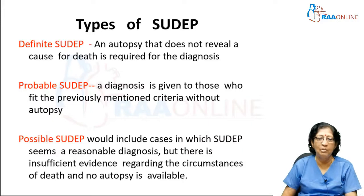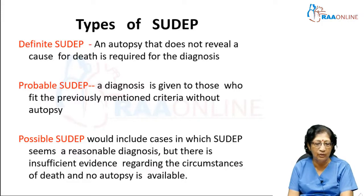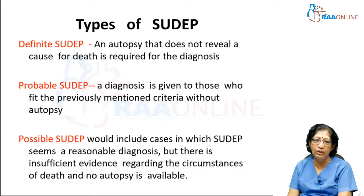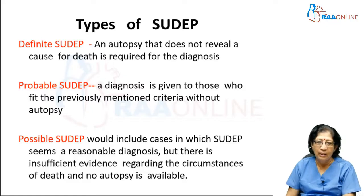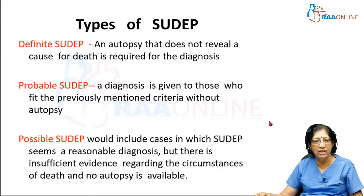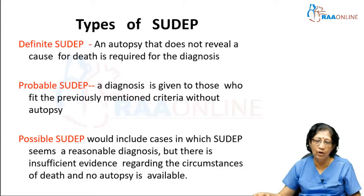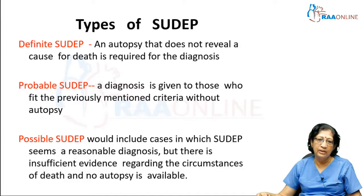You have definite SUDEP, probable, and possible. Definite SUDEP is when an autopsy is done which does not reveal any cause of death, which is required for the diagnosis of SUDEP. Probable SUDEP is a diagnosis given to those who previously fit the mentioned criteria without autopsy — the clinical circumstances point to SUDEP but autopsy was not done. Possible SUDEP includes cases in which SUDEP seems a reasonable diagnosis but there is insufficient evidence regarding the circumstances of death and autopsy is not available.